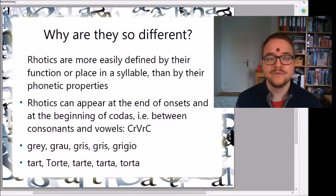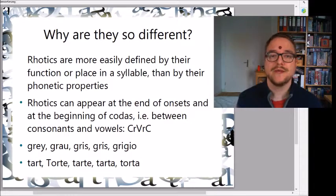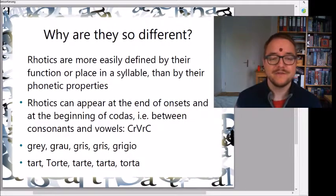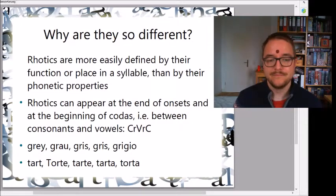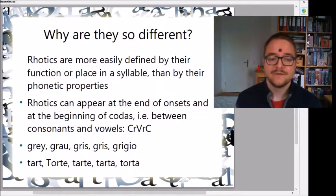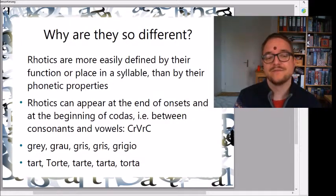I chose two examples across five different European languages — the word for 'gray' and the word for 'tart'. In English 'gray', German 'grau', French 'gris', Spanish 'gris', Italian 'grigio' — the R appears after the first consonant and in front of the vowel. For 'tart': English 'tart', German 'Torte', French 'tarte', Spanish 'torta', Italian 'torta' — the R appears after the main vowel and in front of the final consonant.